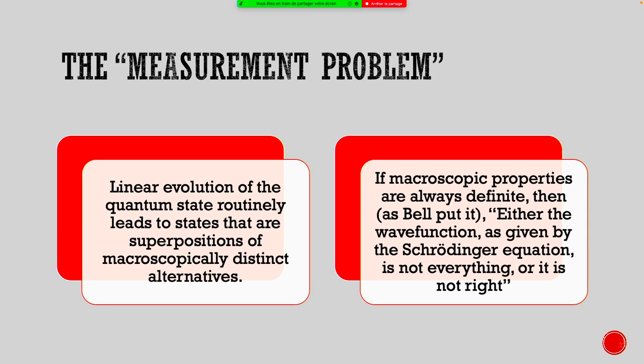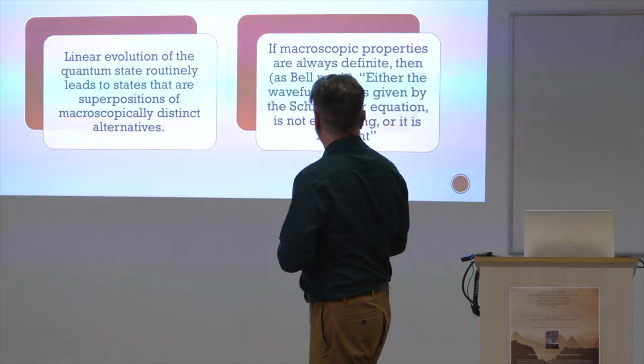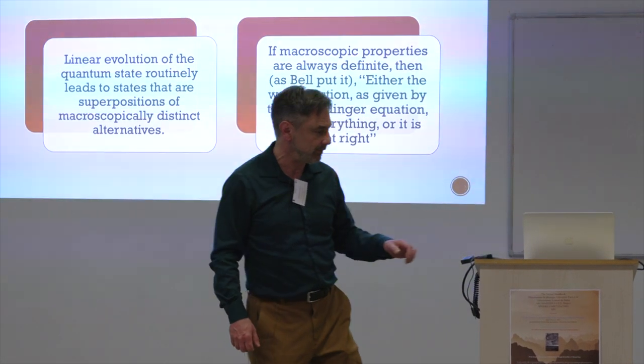And Bell put it nicely. If in fact macroscopic properties of things are always definite, then either the wave function that's given by the Schrödinger equation is not everything or it's not right.